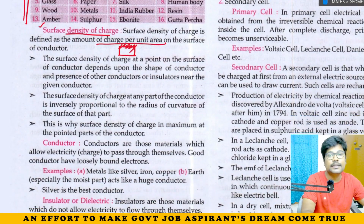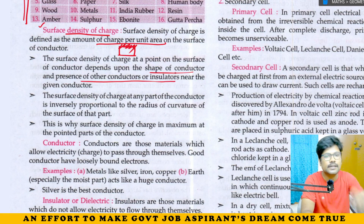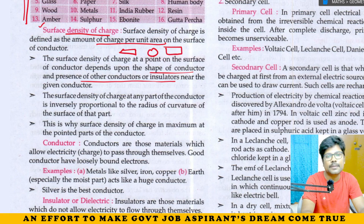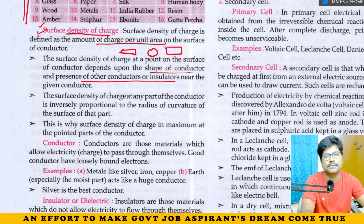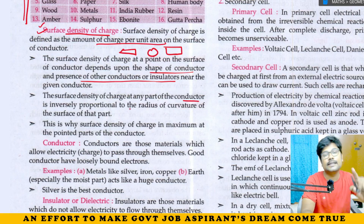This surface charge density is important. It depends upon the shape of a conductor and the presence of other conductors or insulators near this given conductor. One thing affects it — the shape of the conductor. Another thing affects it — whether another insulator or conductor is nearby. So surface density depends on these two things.